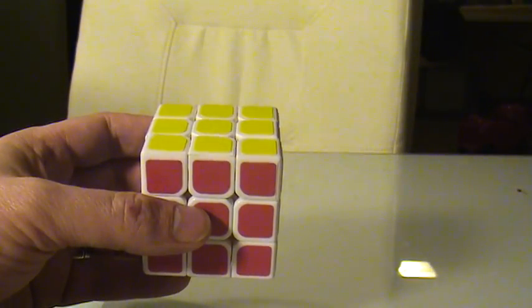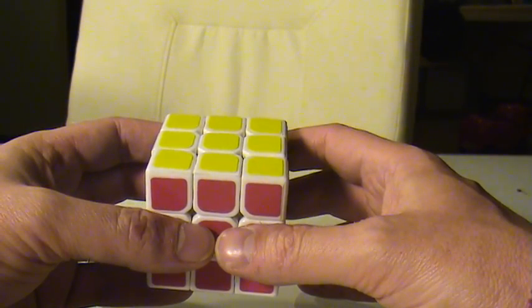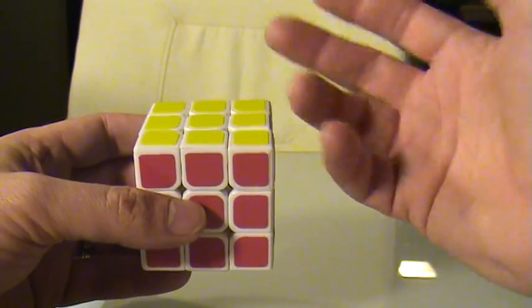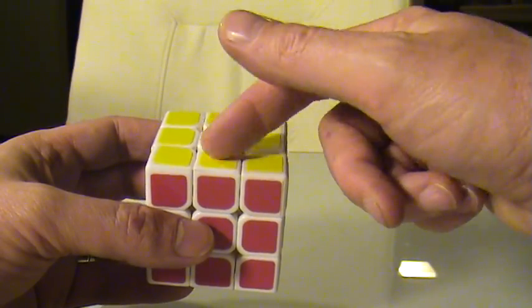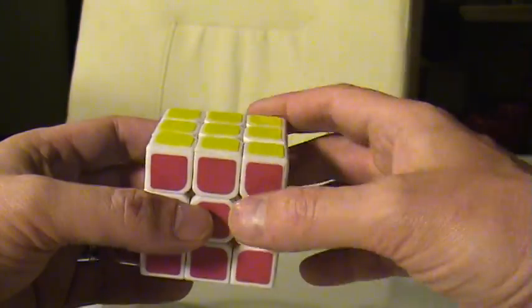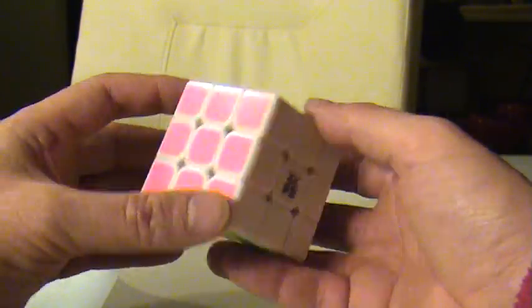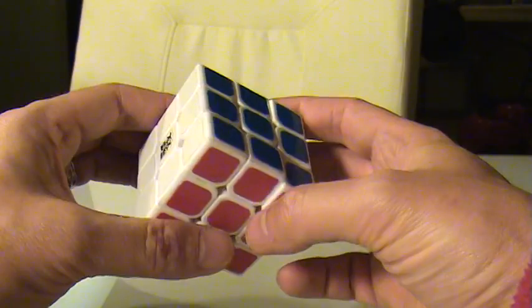So you may just want to repeat the three-way switch on any one of those so that you don't have to do these more complicated algorithms for the across-from-each-other and the kitty corner situations. So that's it, you did the three-way rotation and the cube is solved, and you now can solve the Rubik's cube.